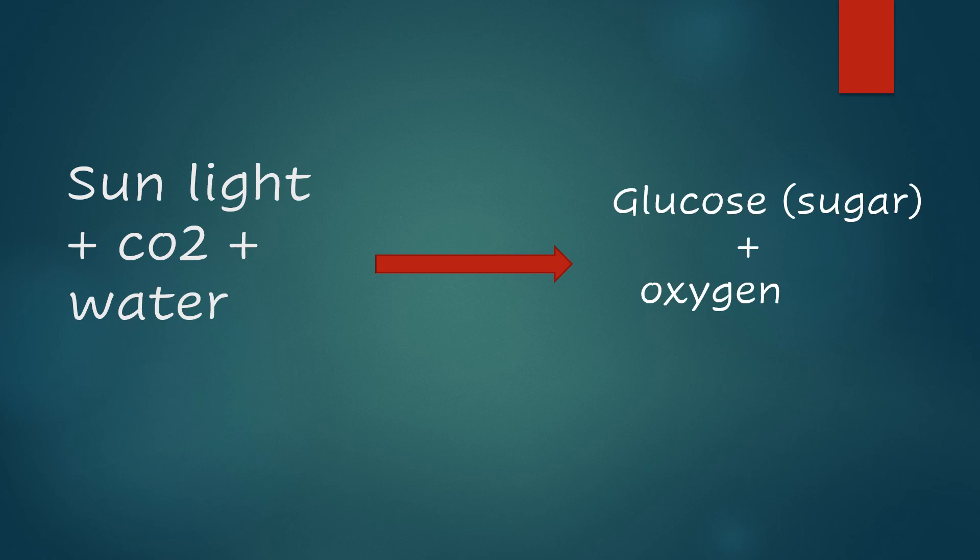Now comes the main process. When the sunlight, carbon dioxide and water react together, they form glucose which is sugar and oxygen. This process is called photosynthesis.